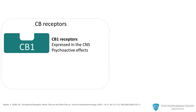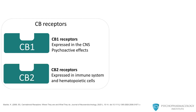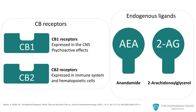Cannabinoid CB1 receptors are expressed mainly in the CNS and mediate many of the psychoactive effects of cannabinoids. There is another receptor called the CB2 receptor, which is expressed mainly in the immune system and in blood cells. The best known endogenous cannabinoid receptor ligands are anandamide and 2-arachidonylglycerol, or 2-AG for short.